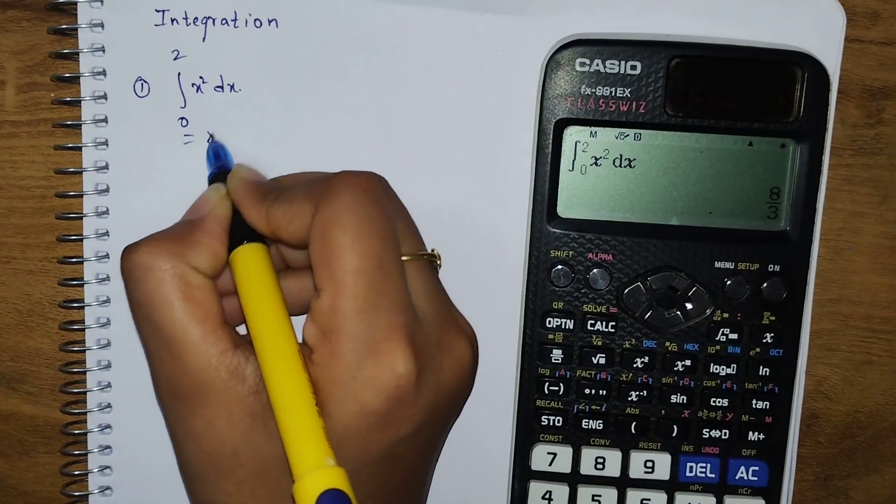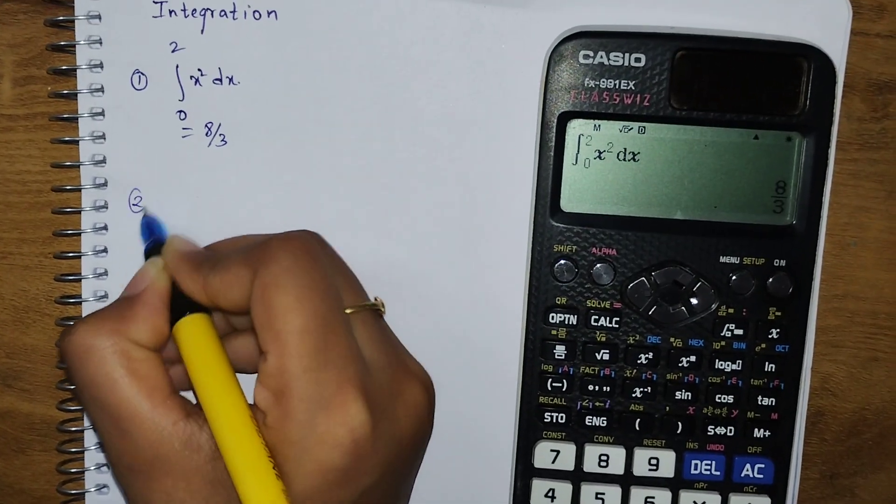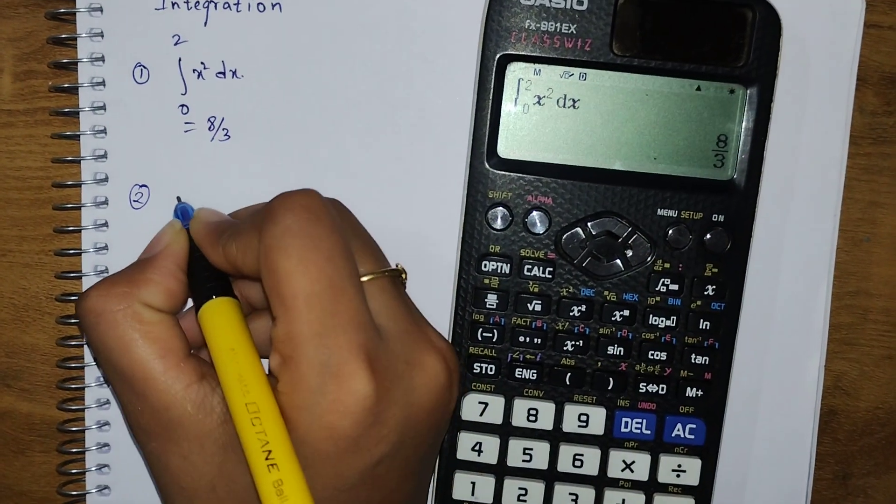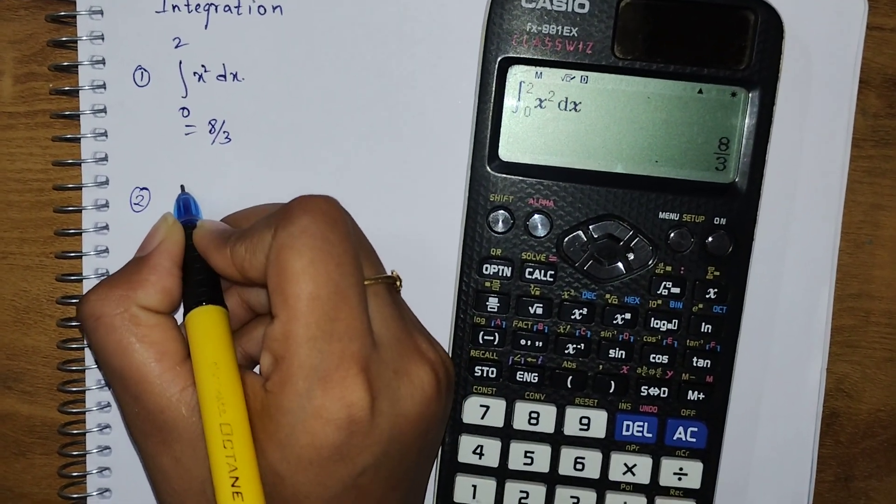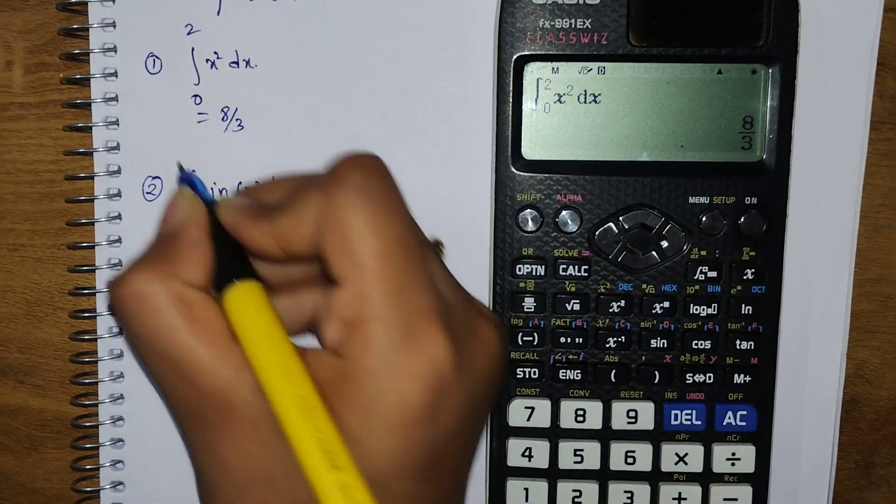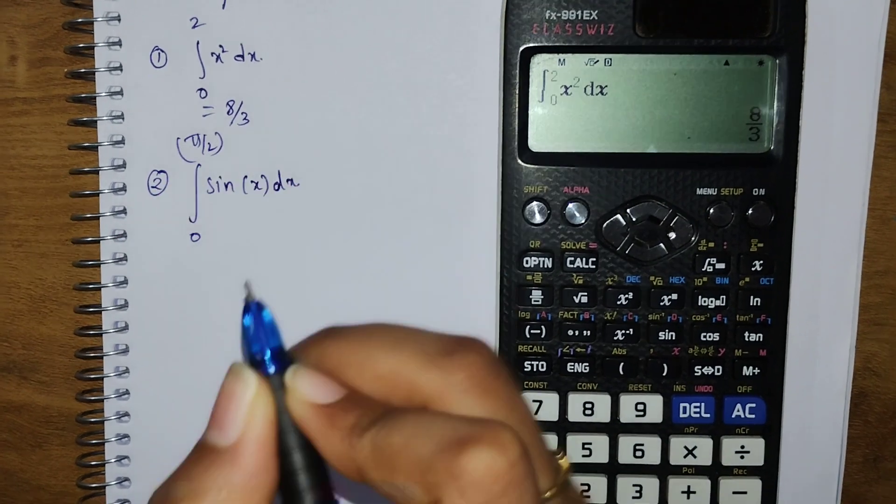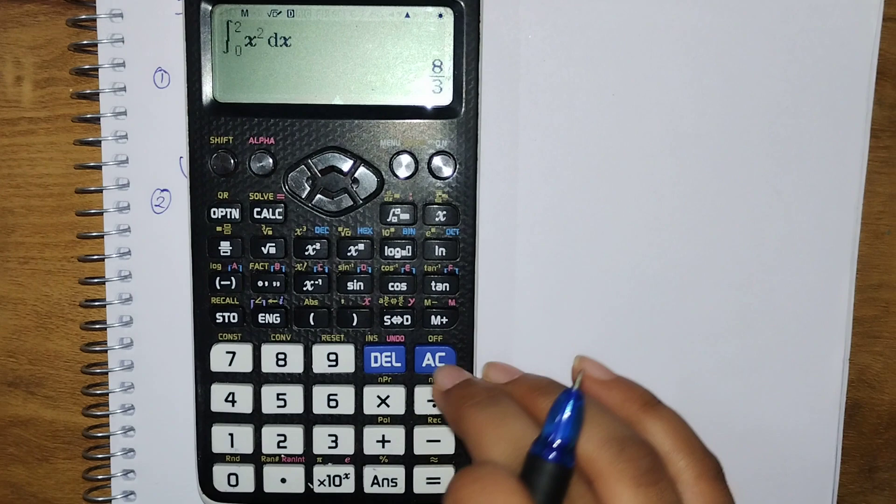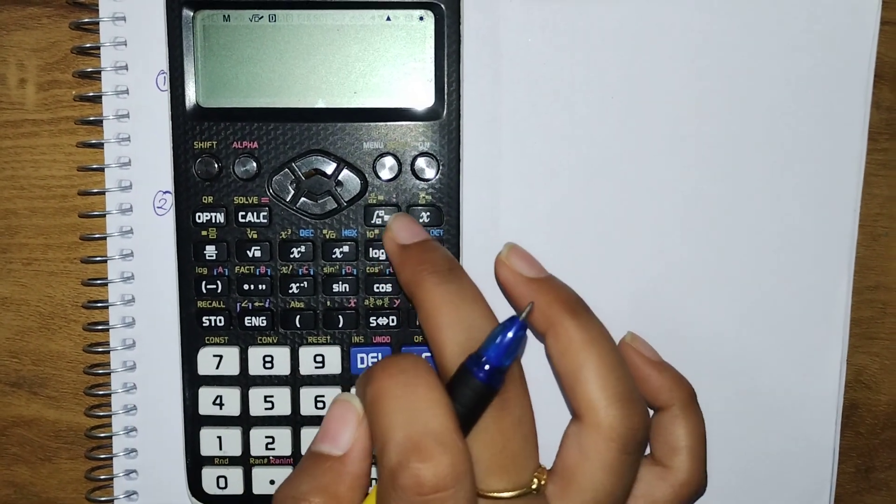Next, let us try with trigonometric functions. We have sin(x) dx from 0 to π/2. We are going to clear this off.